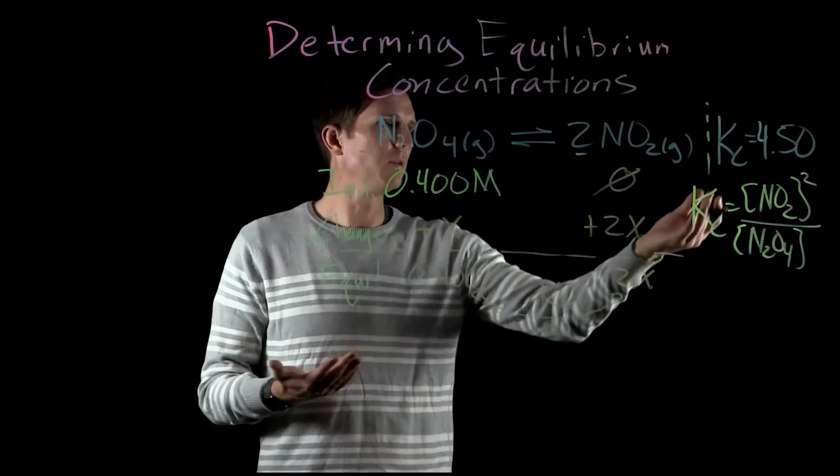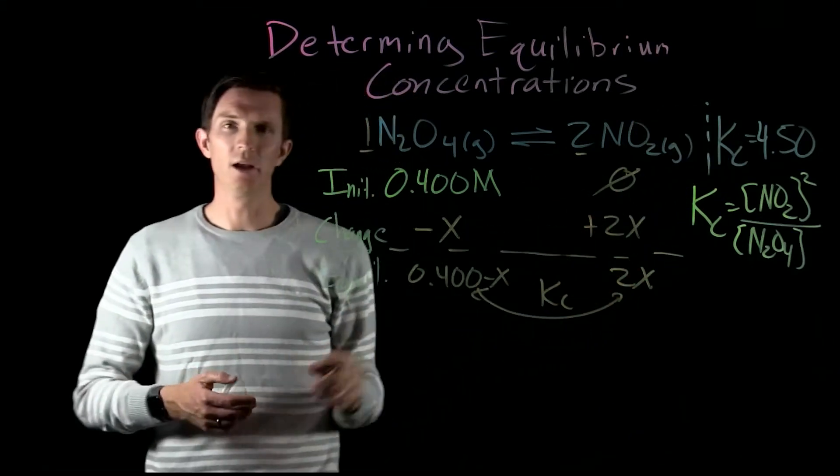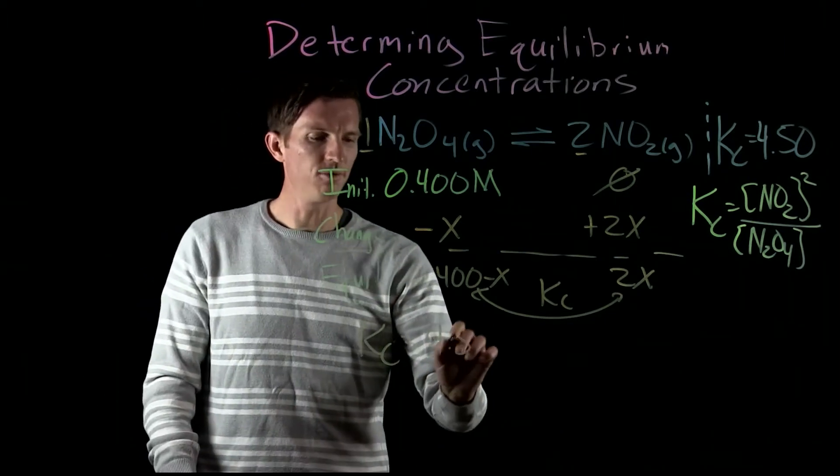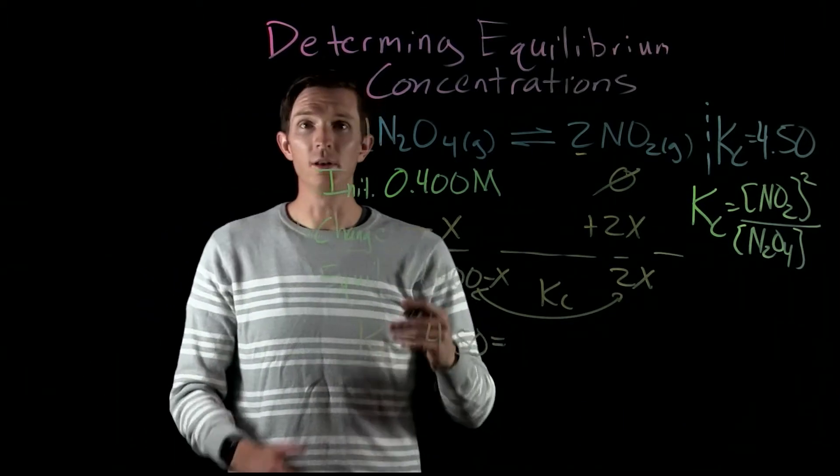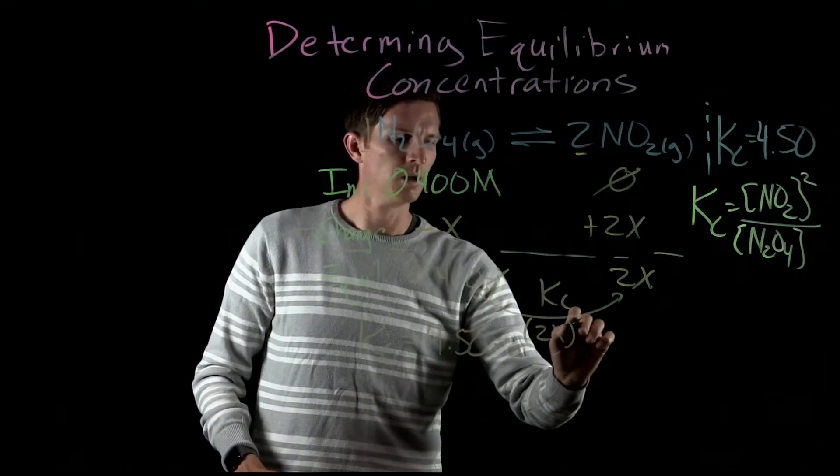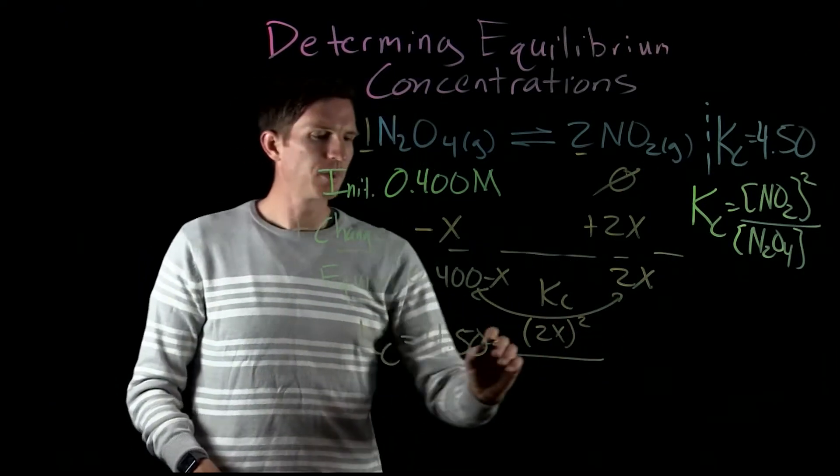So what we could do is we could say, well, let's plug in our expression that we would have for Kc and our equilibrium concentrations. So we'd say our Kc value of 4.50 equals the concentration of NO2 which we said was 2X squared, divided by the concentration of N2O4 which was 0.40 minus X.